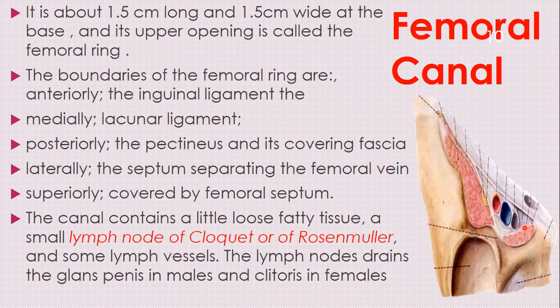Looking at the floor of the femoral triangle, the adductor longus is most medial and the pectineus is just medially afterwards. This pectineus lies on the posterior aspect of the femoral ring. Superiorly, it is formed by the femoral septum. The canal contains loose fatty tissue.